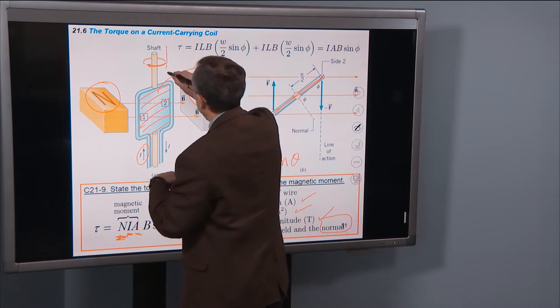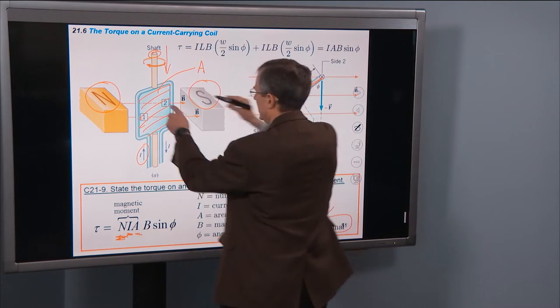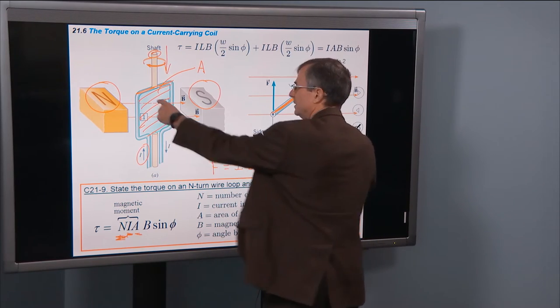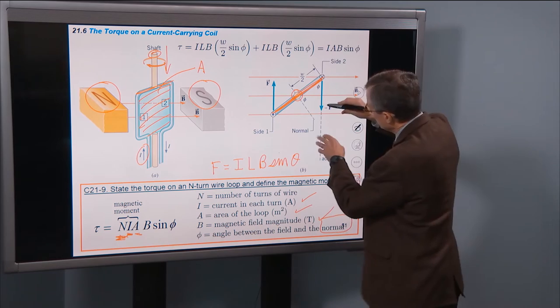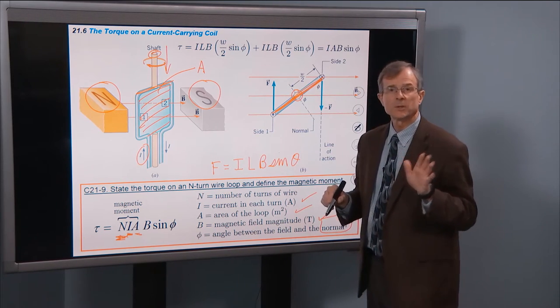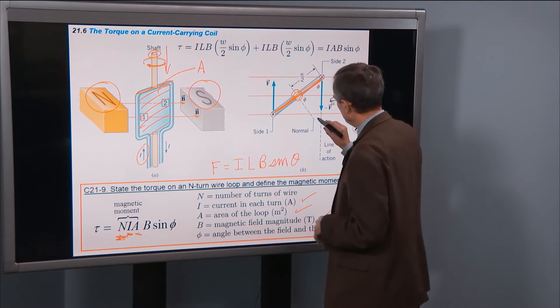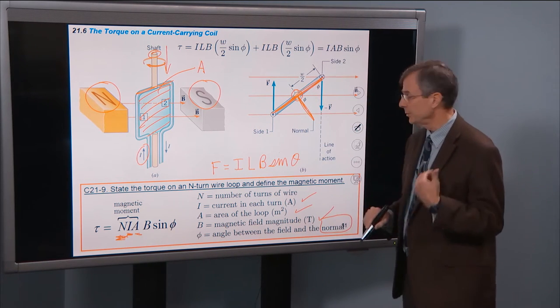If this is the top view of the coil of wire, so we're looking down from above, here's the shaft, and then here's what we're actually seeing in this diagram is this top piece of this coil of wire. The normal direction is perpendicular to the plane of that coil or that loop. So that's this direction here, perpendicular to the loop.